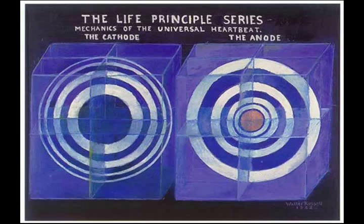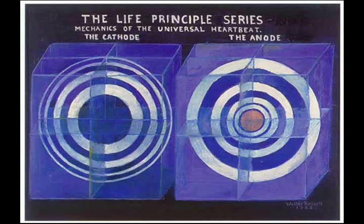We see here the illustration of this on one interior cathode plane of the cube. Imagine this on all three planes of magnetic stillness simultaneously, and you can see how the sphere is the cube compressed into intense heat and maximum motion, and the cube is the sphere expanded to the cathode cube planes of stillness and absolute cold in space.